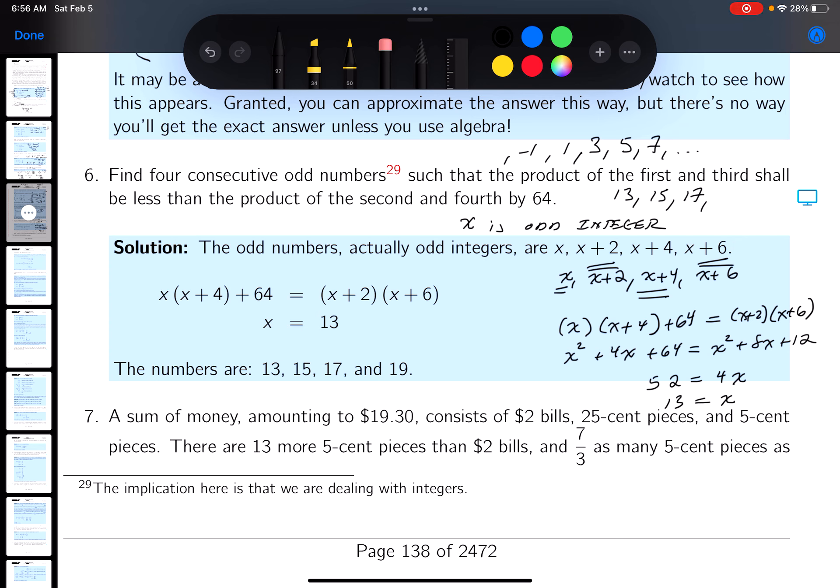Now is 13 an odd integer? Yeah it is. So what are the odd integers? 13, the next one's gonna be 13 plus 2 which is 15, next one's gonna be 15 plus 2 which is 17, the next one's gonna be 17 plus 2 which is 19.